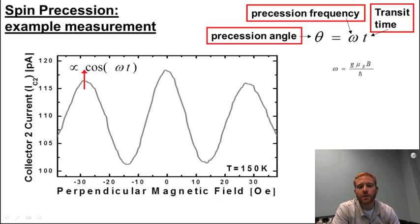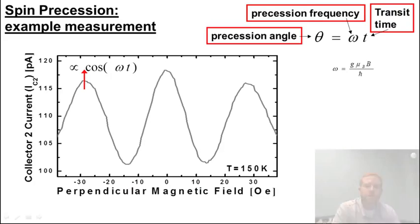In other words, it doesn't matter if the spin precesses clockwise or counterclockwise. Now, if all electrons had the same transit time from injector to detector, we would expect this cosine-like oscillation to continue indefinitely for higher and higher orders of precession rotations. But that's not what happens.